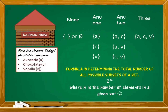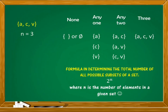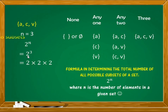Using the previous example, a set with elements avocado, chocolate, and vanilla — A, C, and V — where N is equal to 3, because the number of elements is 3. Using the formula 2 raised to N by substitution, since N equals 3, we substitute 3 for N. The exponent — the small number in the upper right of the base — tells how many times the base will be multiplied as a factor. So 2 raised to 3, or 2 cubed, is equal to 2 times 2 times 2, which equals 8.